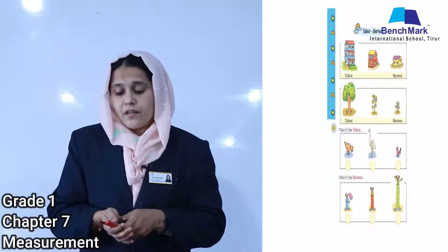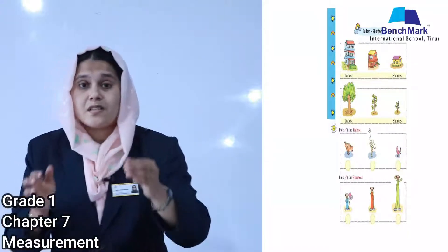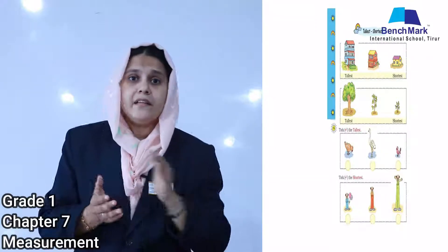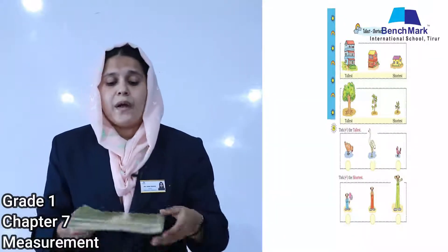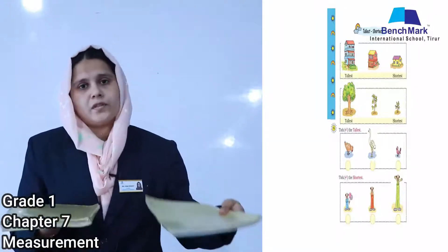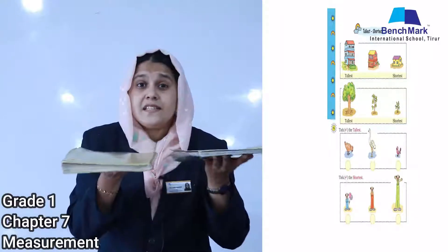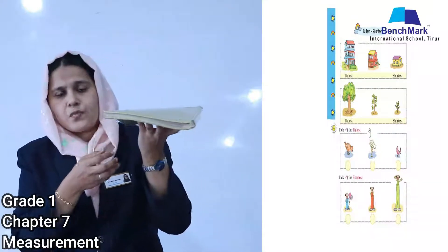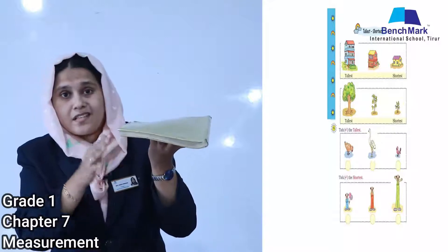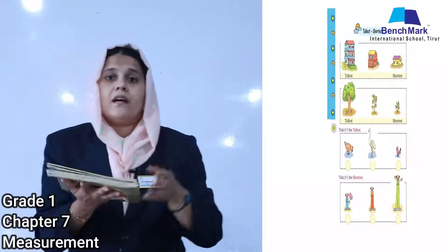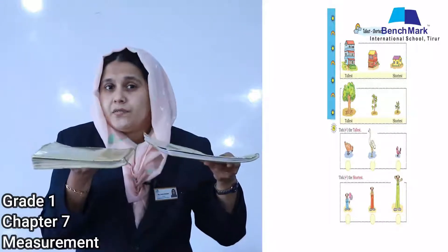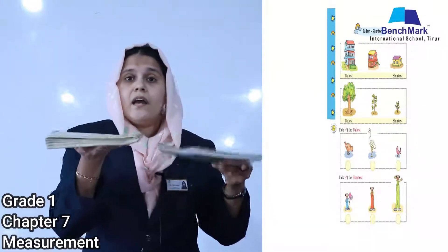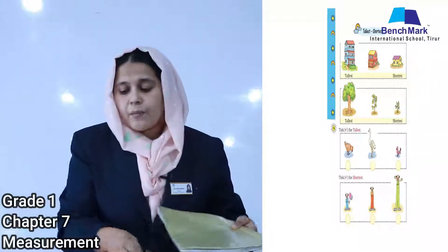Next, we are comparing objects according to their size — that means according to their thickness: thicker and thinner. Take your maths textbook and workbook. Which one is thicker? The textbook contains a lot of pages, so we call it thicker. Our textbook is thicker than our workbook.